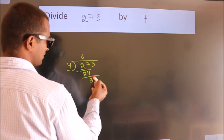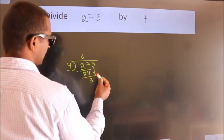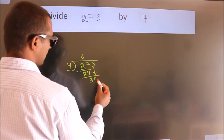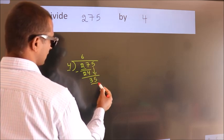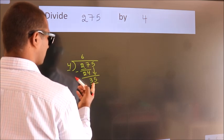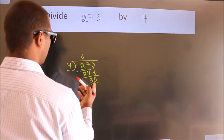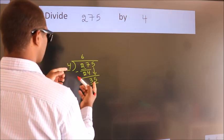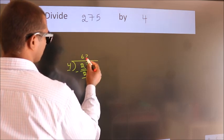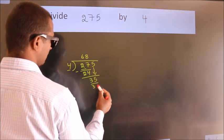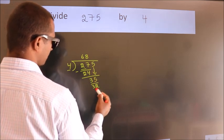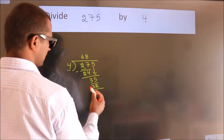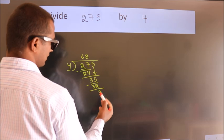After this, bring down the beside number. So 5 comes down, giving us 35. A number close to 35 in the 4 times table is 4×8 = 32. Now we subtract and we get 3.